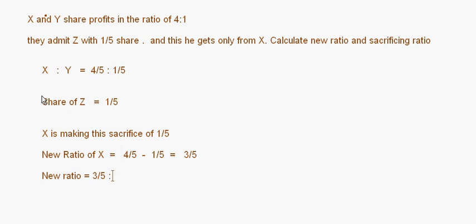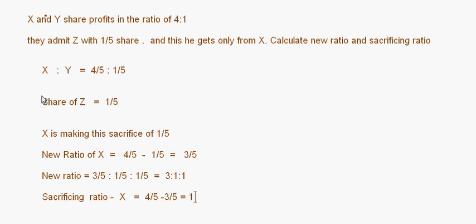The sacrificing ratio is old ratio minus new ratio. For X: 4/5 minus 3/5 equals 1/5. For Y: 1/5 minus 1/5 equals 0, meaning Y is not sacrificing anything — it is nil. So you can have questions where only one partner is sacrificing. With that, I come to the end of this session on sacrificing ratio.